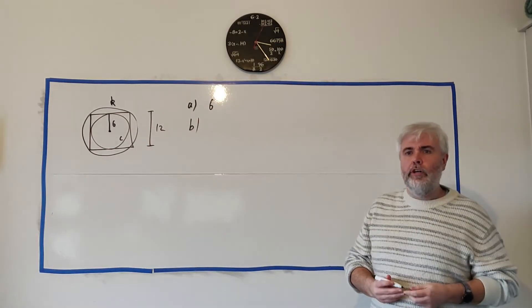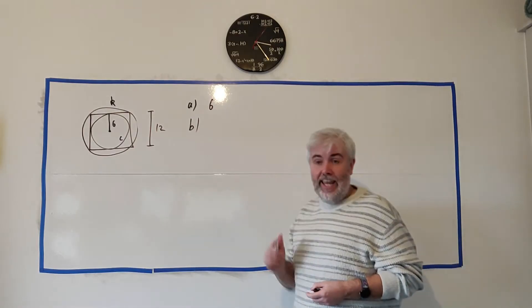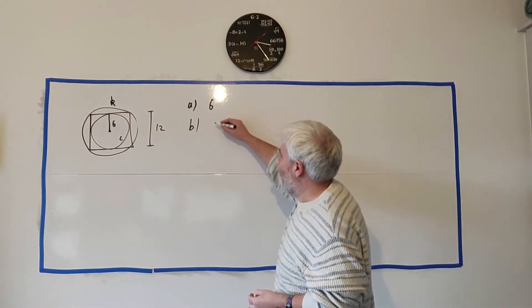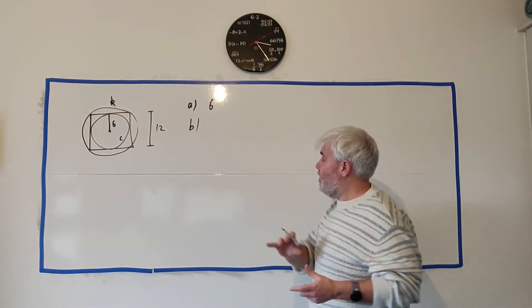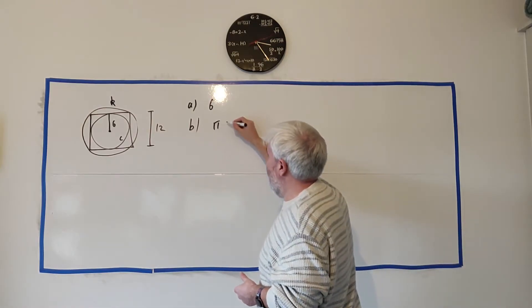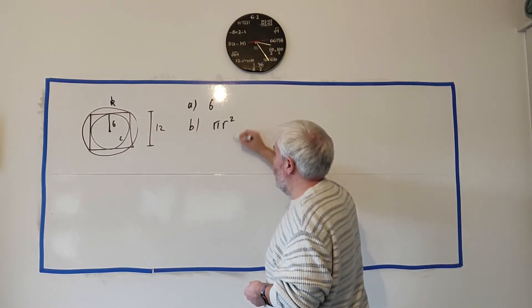Part B they ask you to work out the area of this circle, again C. Again this should be a fairly straightforward one. We look up our tables and we should find that the area formula is pi r squared.